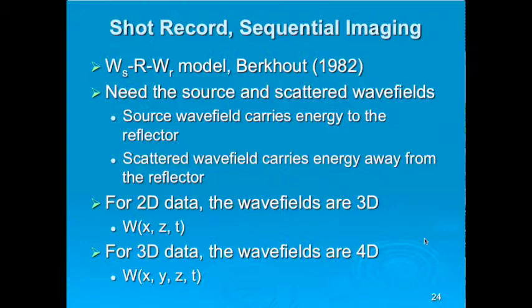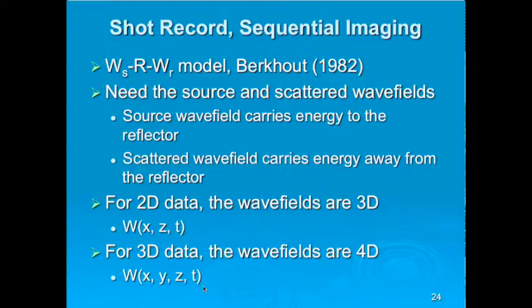These source and scattered wave fields are a critical part of the process. For 2D data the wave fields are 3D — in X, Z, and T. For 3D data you can do the same thing; the wave fields are 4D — in X, Y, Z, and T. That's hard to draw but certainly computable.